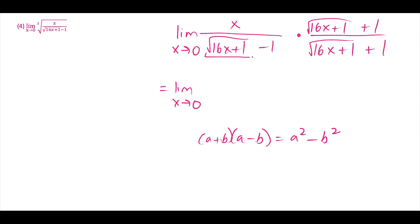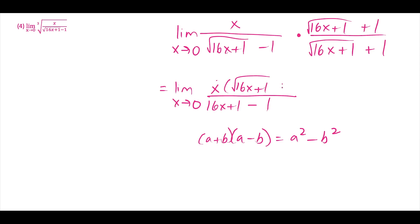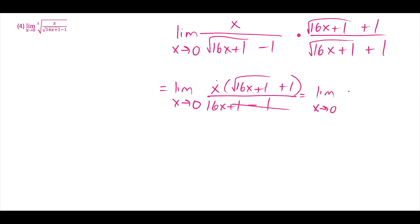On the bottom, multiplying a binomial by its conjugate gives a difference of two squares: the first term squared minus the second term squared. Squaring √(16x + 1) gives 16x + 1, and squaring 1 gives 1, so the denominator becomes (16x + 1) − 1 = 16x. On top, we leave it in factored form: x times (√(16x + 1) + 1). The 1 − 1 terms cancel on the bottom, simplifying to 16x.